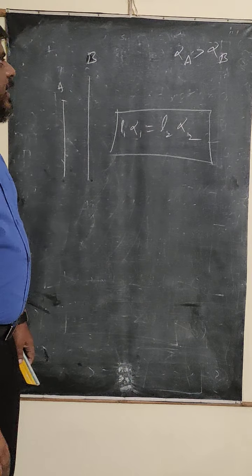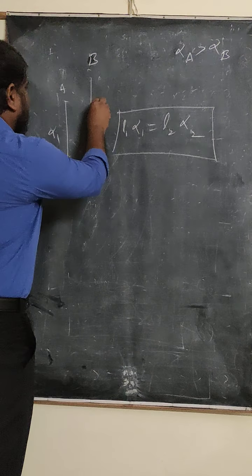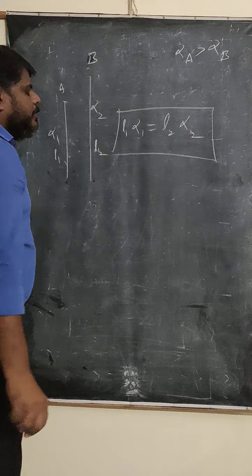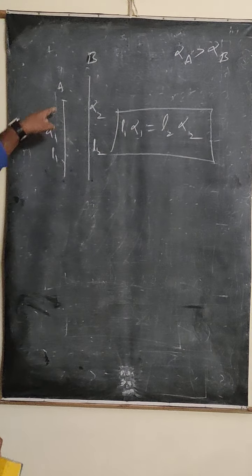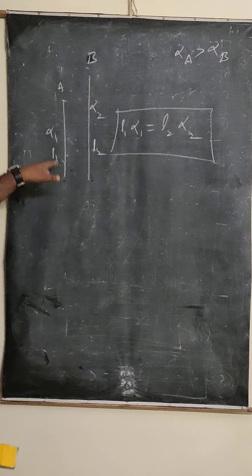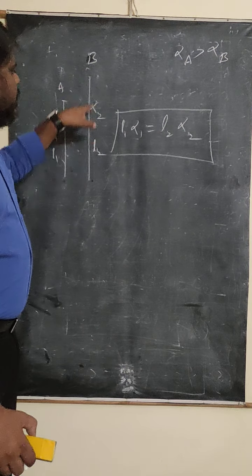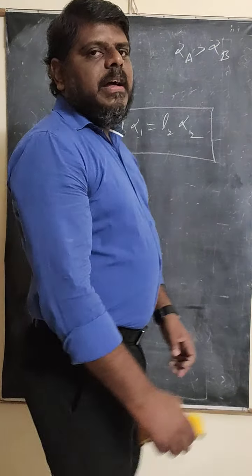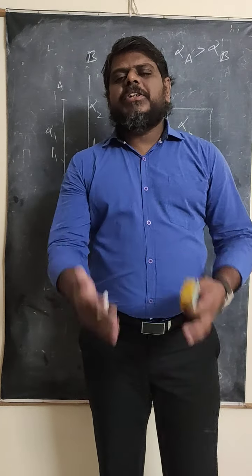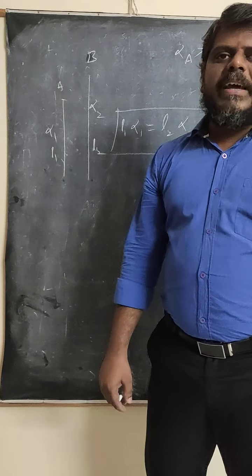Here, alpha1 belongs to rod A and alpha2 belongs to rod B. L1 is the initial length of rod A and L2 is the initial length of rod B. Alpha1 is the coefficient of linear expansion of A and alpha2 is the coefficient of linear expansion of B. If this condition is satisfied, whatever the temperature change, the difference between the two rods will always remain the same.